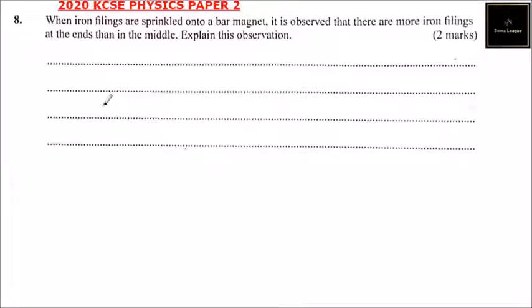Question number eight. When iron filings are sprinkled on a bar magnet, it is observed that there are more iron filings at the ends than in the middle. Explain this observation. So for a bar magnet,